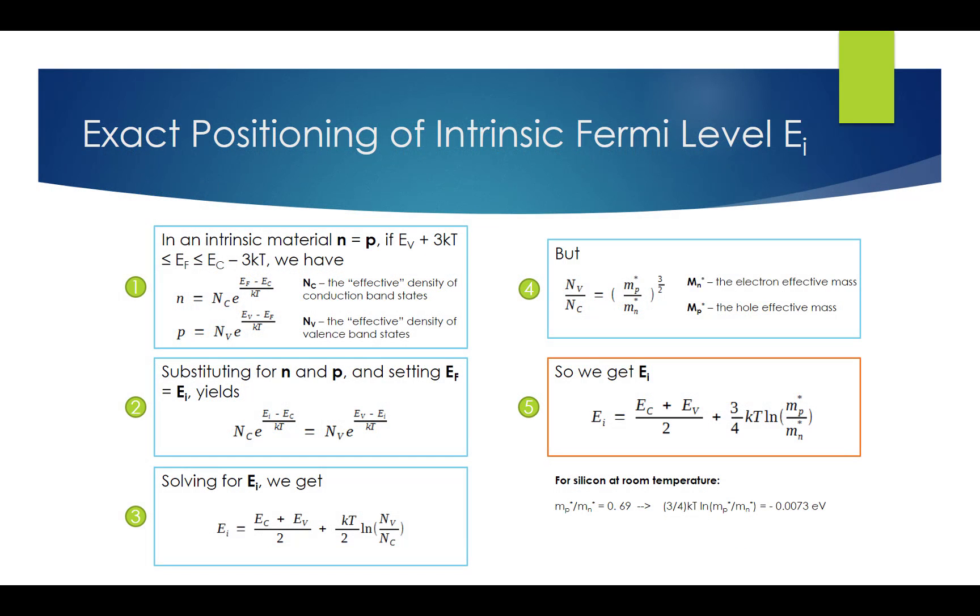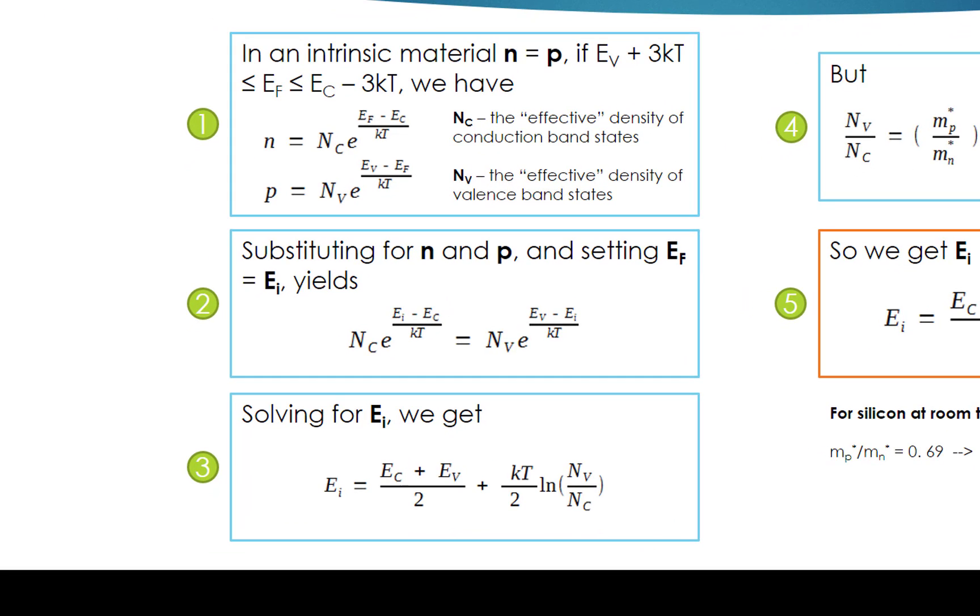On this slide, we will determine the exact positioning of intrinsic Fermi level EI. In the intrinsic semiconductor material N equals P, we can also use the non-degenerate formulas for N and P as shown, where Nc is effective density of conduction band states, and Nv is effective density of valence band states.